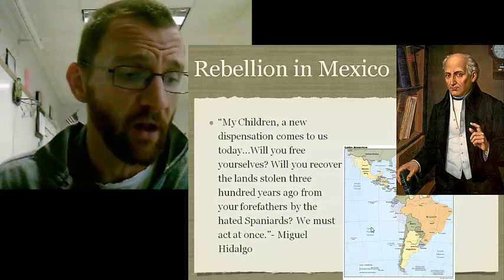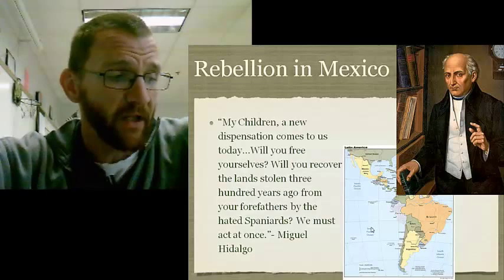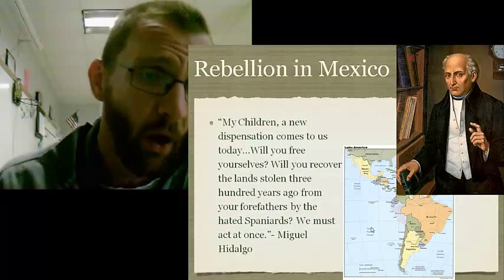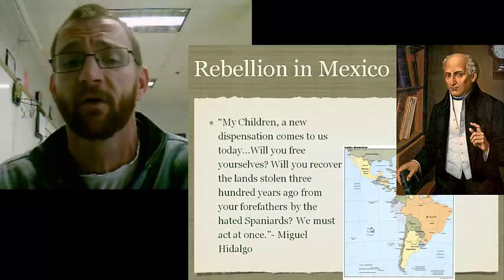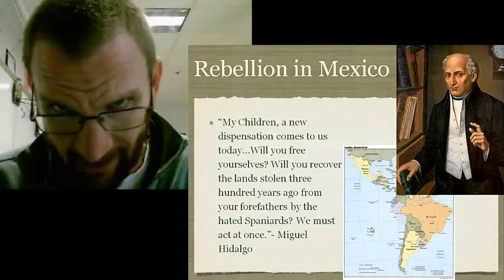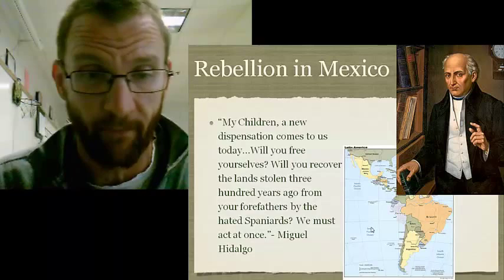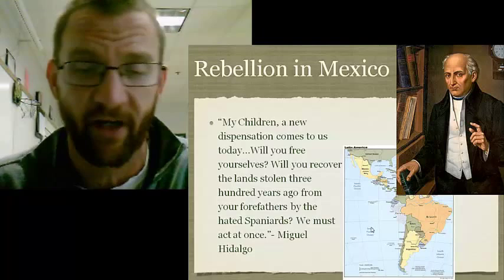Hidalgo started the revolution with the Grito de Dolores — the Cry of Dolores — on November 16, 1810, when he gave a speech in front of his church and said, 'My children, a new dispensation comes to us today. Will you free yourself? Will you recover the land stolen 300 years ago from your forefathers by the Spaniards? We must act at once.' He created an army and people followed him, but their rebellion was pretty handily squashed in 1811 and he died.